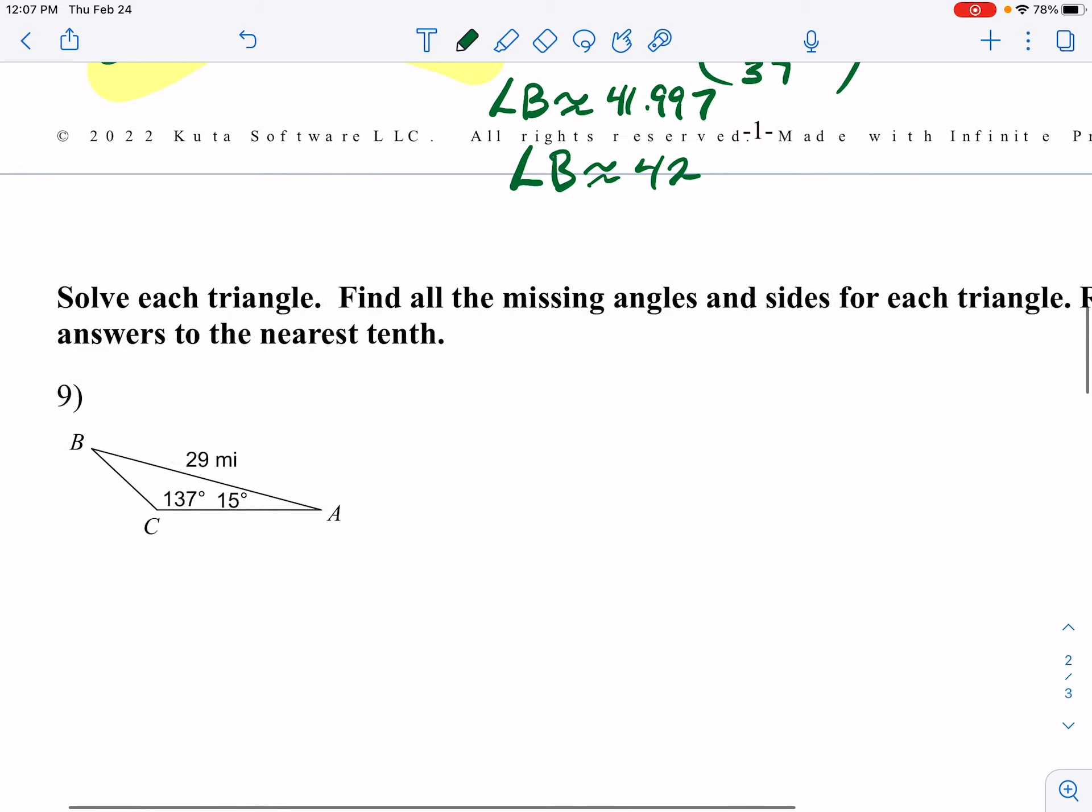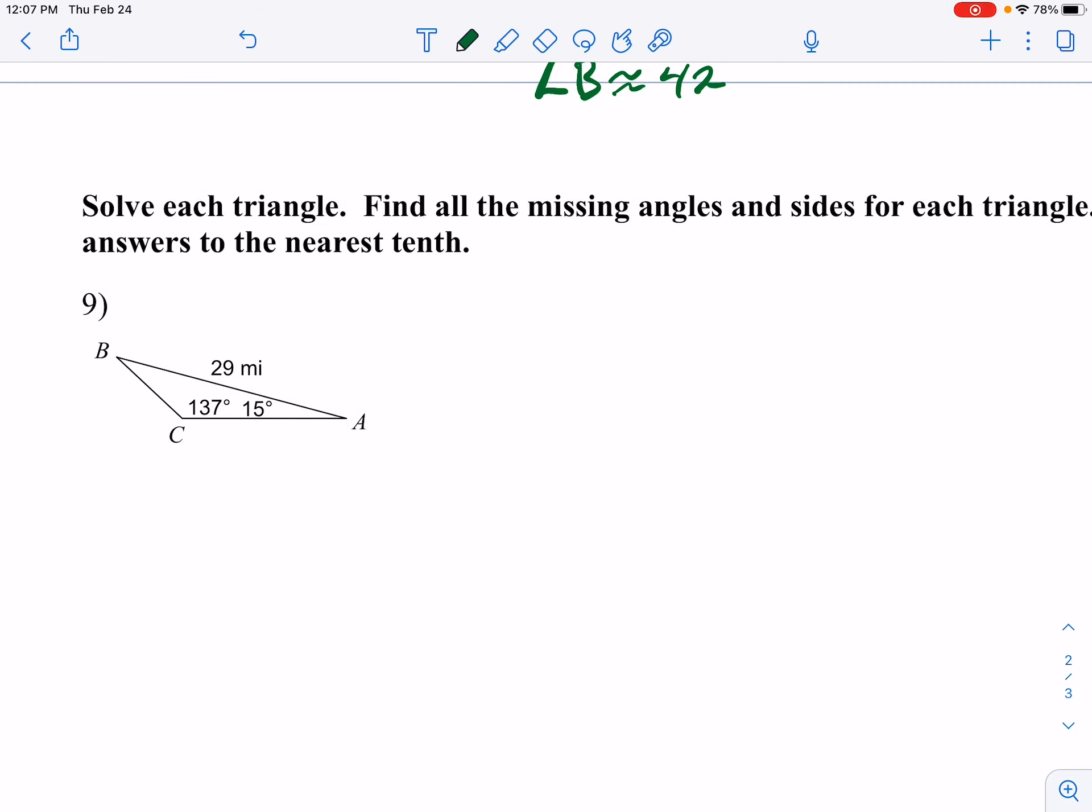On the back side here, it says solve the triangle, which means find all the angles and find all the sides. To solve a triangle, you have to find every part and piece, every side, every angle. So we need to know what angle A is, angle B, angle C, side A, side B, and side C. Just looking at the picture, we know three out of the six things already. Angle A is 15 degrees, angle C is 137.